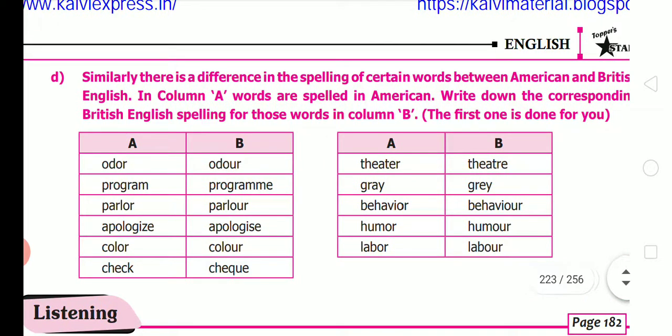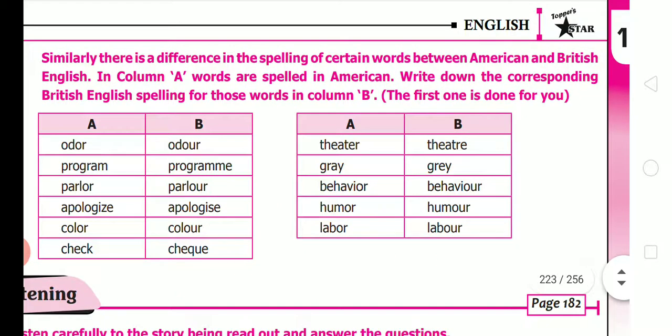There is also a difference in spelling between American and British English. 'Odor' is American English, while 'odour' (O-D-O-U-R) is British. 'Program' is American; 'programme' (P-R-O-G-R-A-M-M-E) is British. 'Parlor' is American (P-A-R-L-O-R); 'parlour' (P-A-R-L-O-U-R) is British. 'Apologize' with a Z is American; 'apologise' with an S is British.